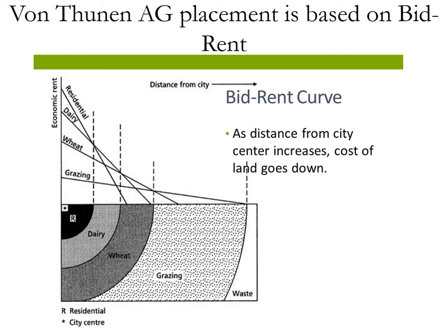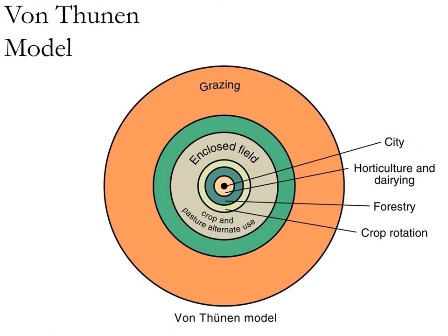Von Thunen follows this thing called the bid rent curve. It's a very confusing chart — there are lines everywhere, dots, words. All you essentially need to know is that the further away you get from the city, the amount of land you can buy goes up because the cost goes down. It's the same thing in urban areas: we know living in a downtown area is going to be tremendously expensive and a small place, versus moving to the suburbs where houses and land get bigger for the same or even less money. We're using the same concept for agriculture because there's intensive agriculture that doesn't require a lot of space and extensive agriculture that does.